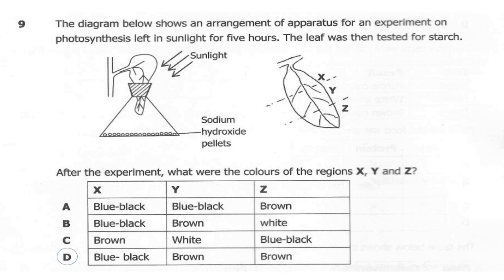The correct answer here is D. X will be blue-black because it's exposed to sunlight, so photosynthesis will take place. Y has been covered by the cobalt, so there is no sunlight reaching the leaf, meaning no photosynthesis — the leaf will remain brown. Z will also be brown because the flask contains sodium hydroxide pellets which absorb carbon dioxide, so no photosynthesis can take place.